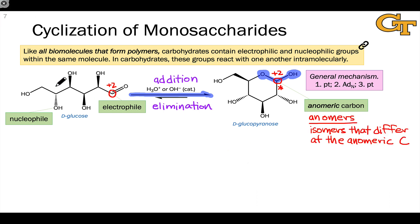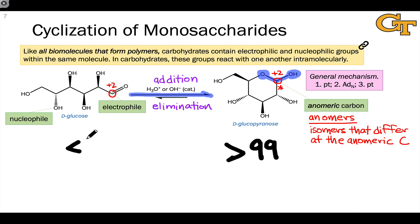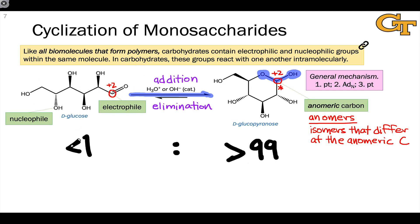The big point is that monosaccharides cyclize spontaneously in solution and tend to heavily favor their cyclic forms — usually greater than 99 to less than 1 in favor of the cyclic form. This doesn't mean that the open chain form can be completely ignored. Reactions of the carbonyl group can still take place as long as they siphon off the open chain form, because thanks to Le Chatelier's principle, removing some of the open chain form will cause generation of more of the open chain form.